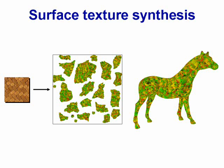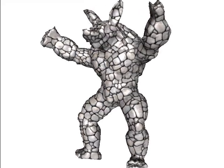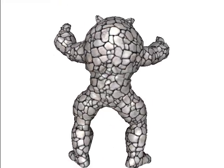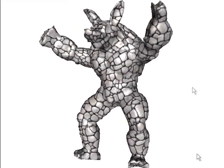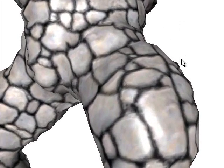Textures are often mapped onto surfaces using an atlas parameterization. We use anisometric synthesis to create predistorted texture in the atlas domain. Here is another example. An efficient indirection scheme lets us span across the atlas charts.